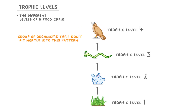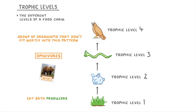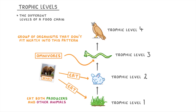One group of organisms that don't fit neatly into this pattern are omnivores, like bears, because they eat both producers and other animals. In general we place omnivores in trophic level 3 because they eat primary consumers, however because they also eat producers it's not really a perfect fit.